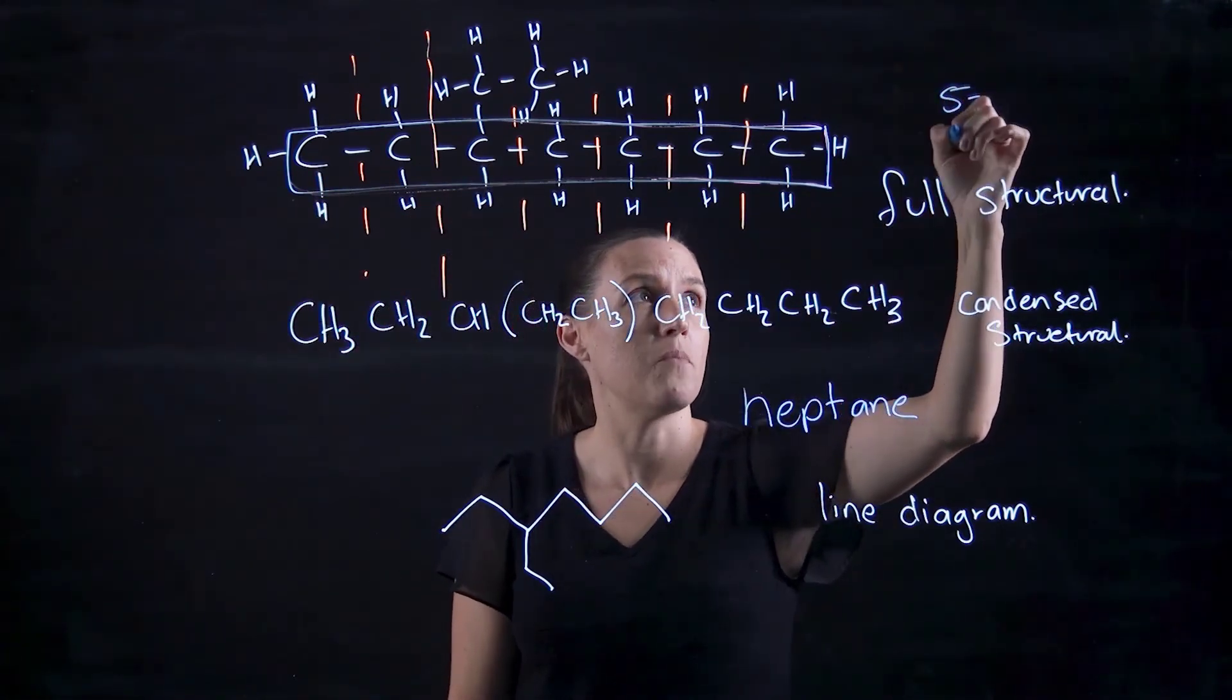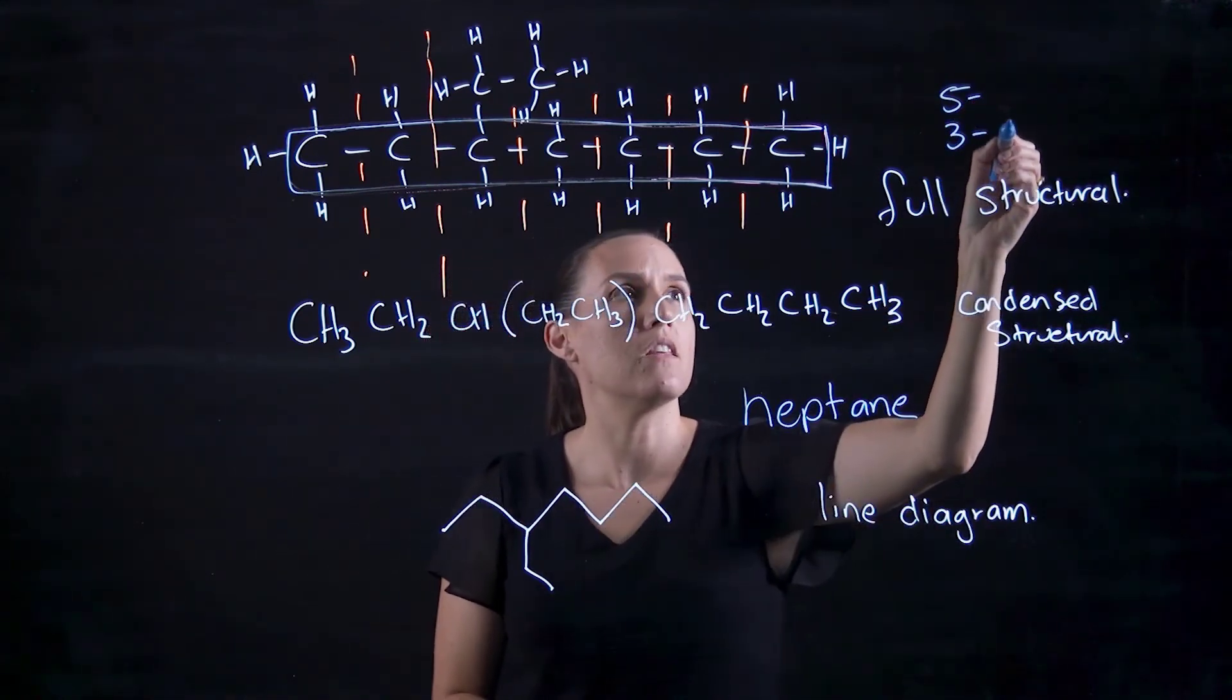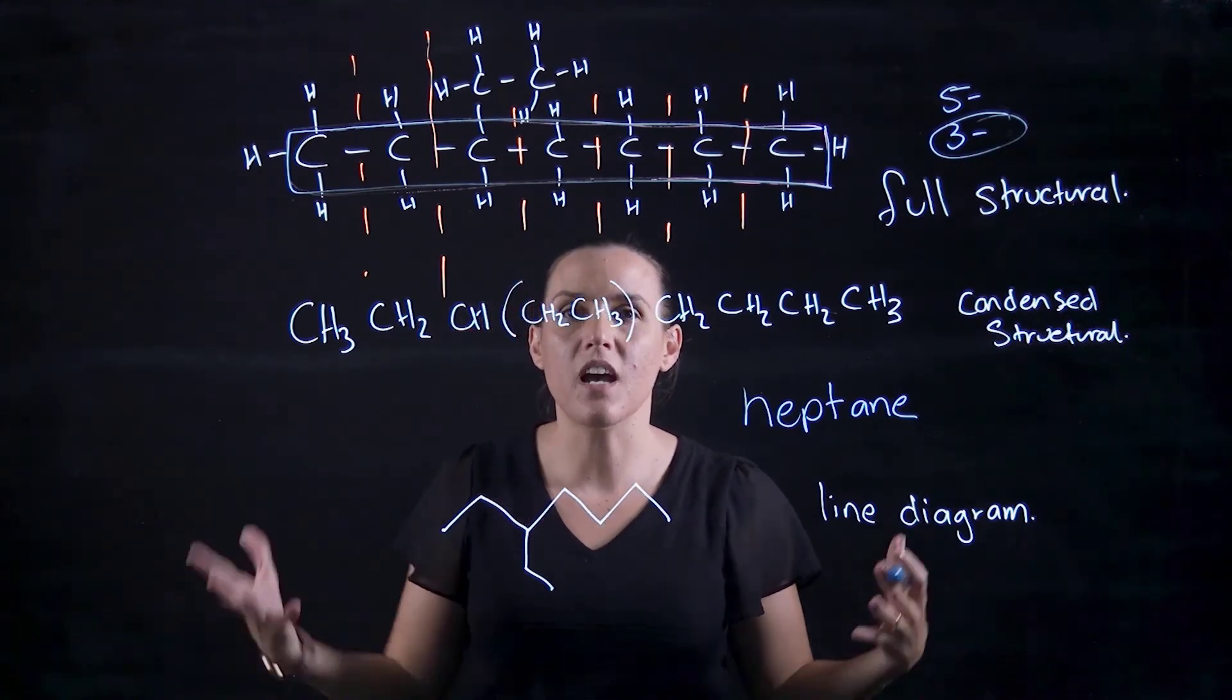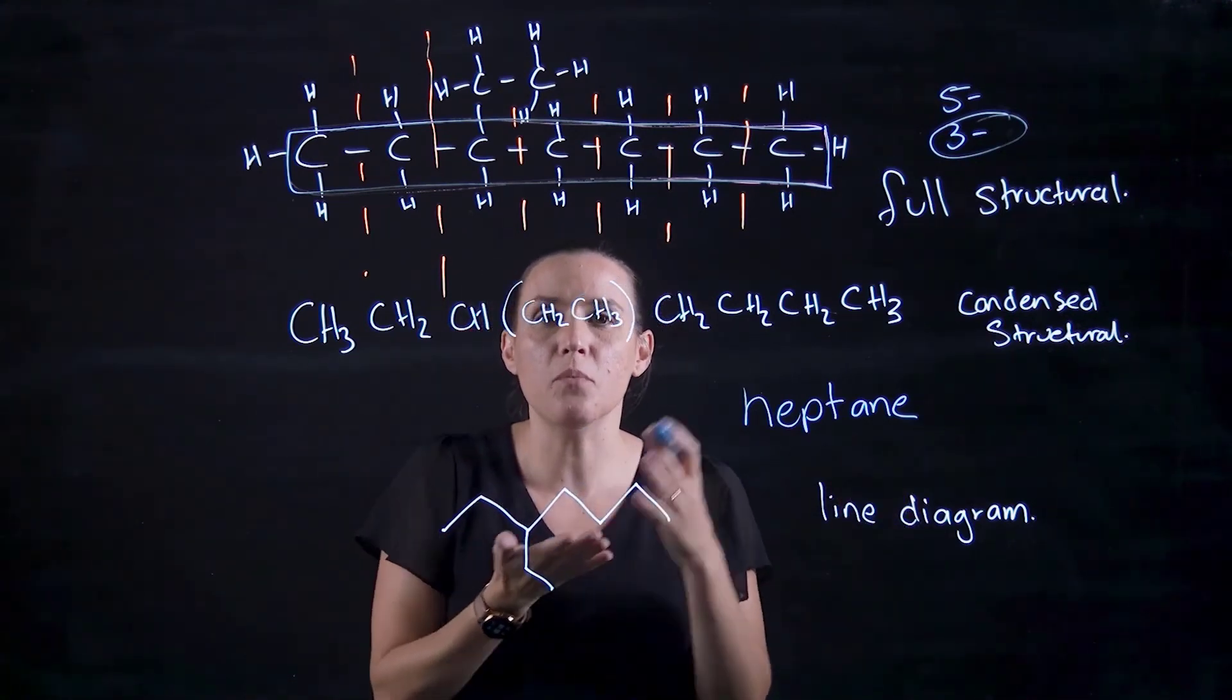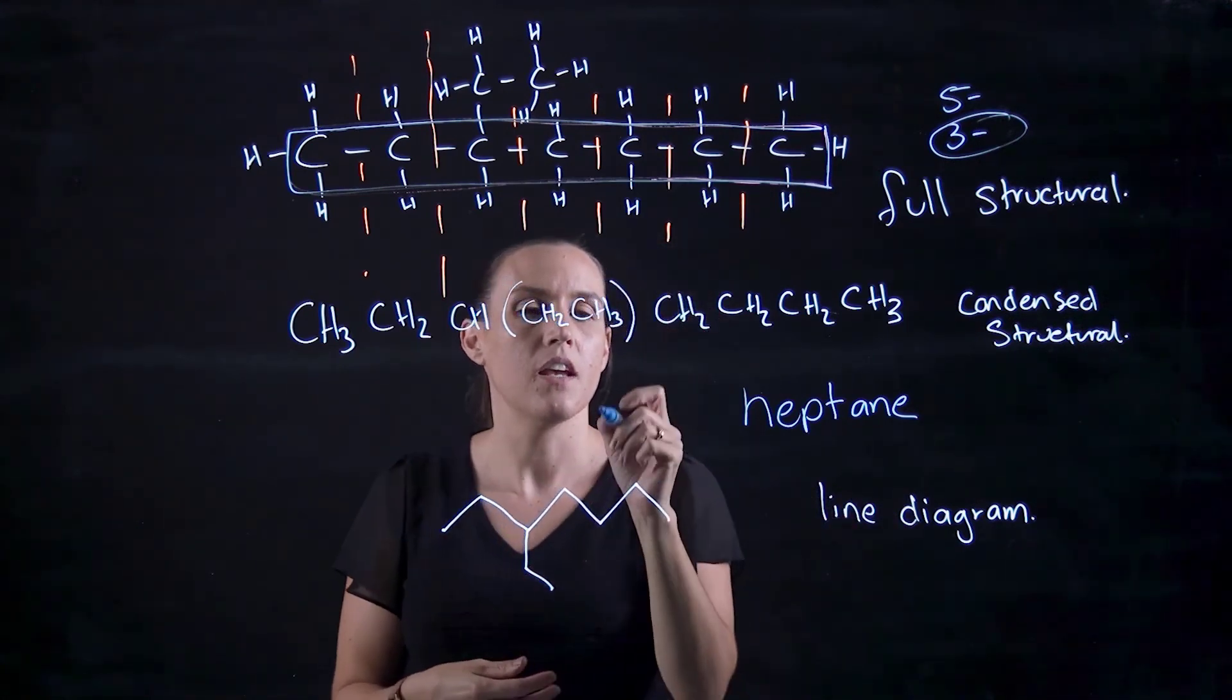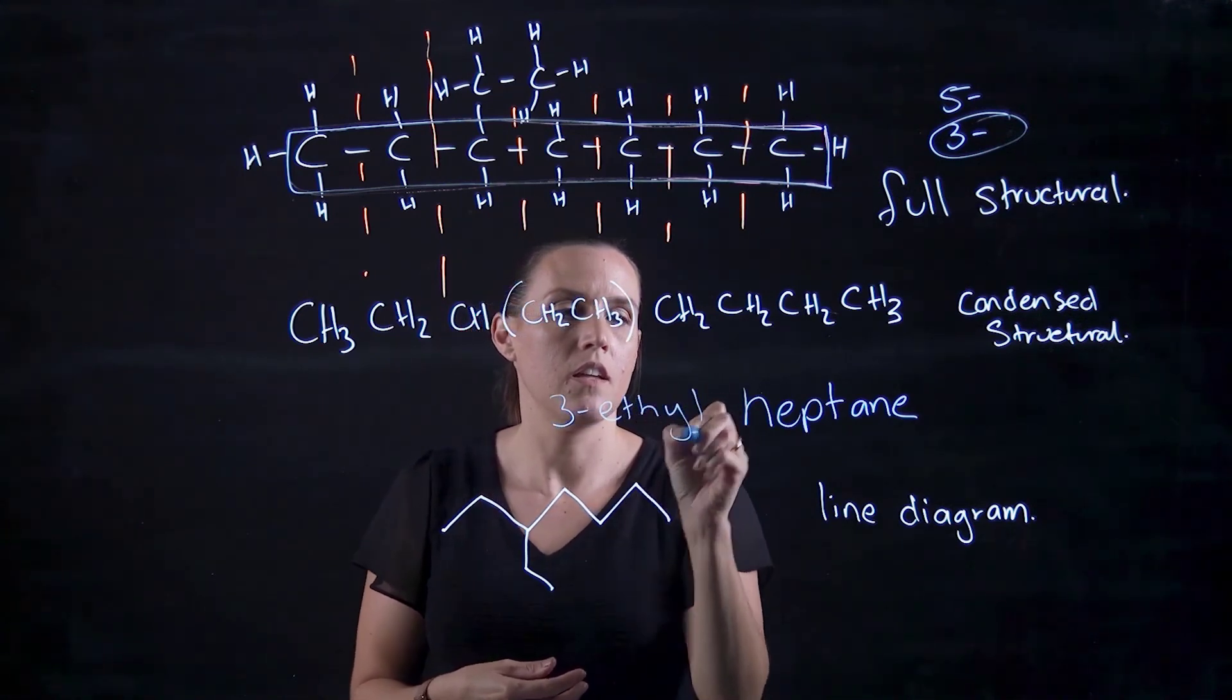So my options are three or five. So I want to go with the smallest number. If I've got multiple ones, I want to add the individual numbers of each carbon that's coming off and get the smallest possible number. So this one is a 3-ethylheptane.